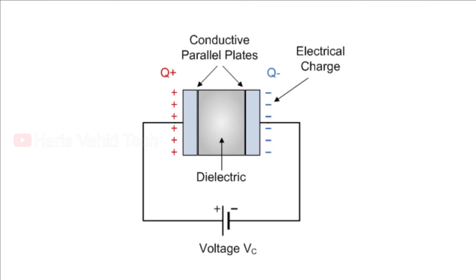Looking at its basic form, a capacitor consists of two or more parallel conductive plates which are not connected or touching each other, but are electrically separated by air or some form of good insulating material — for example, mica, paper, ceramic, etc. The insulating layer between the capacitor plates is commonly called the dielectric.